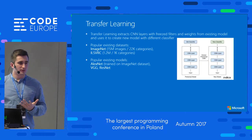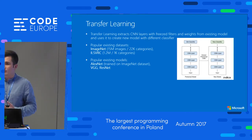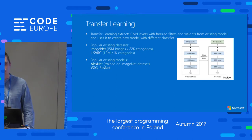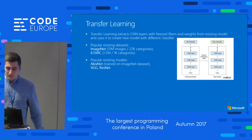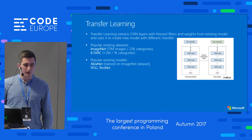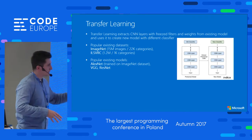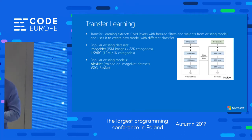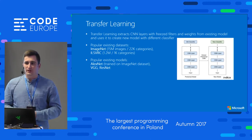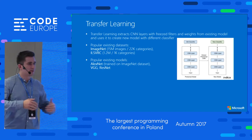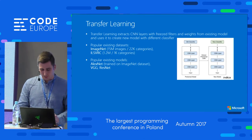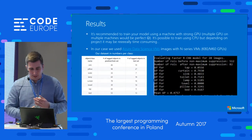Of course you can't do this for every scenario. Our scenario was simple because the objects were similar to what you find in those datasets. But if you imagine detecting cancer cells in medical images, that's a whole different scenario — you'd want to train your own model. Transfer Learning is flexible: you can unfreeze those weights and retrain them with your data, or extract some layers. You have power to adjust it for your project.